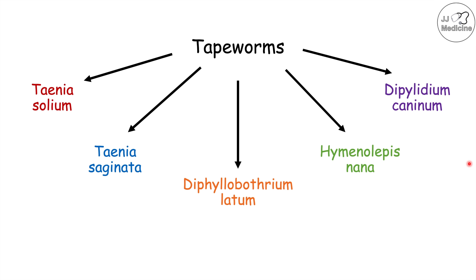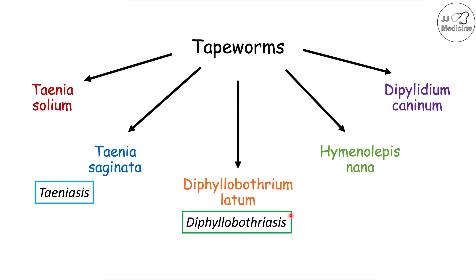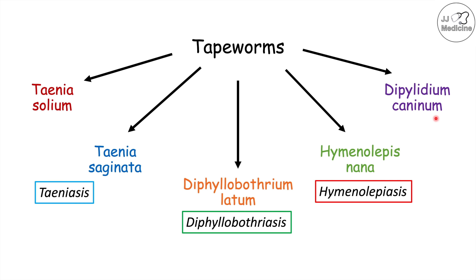An infection with either Taenia species leads to a condition known as taeniasis. Taenia solium, the pork tapeworm, comes from uncooked or undercooked pork products. Taenia saginata, the beef tapeworm, comes from uncooked or undercooked beef. Diphyllobothrium latum is the fish tapeworm, coming from uncooked or undercooked fish, and infection leads to diphyllobothriasis. Hymenolepis nana infection occurs person to person with often no intermediate host, leading to hymenolepiasis. Dipylidium caninum infection in humans comes from ingestion of infected fleas from cats and dogs, leading to dipylidiasis.